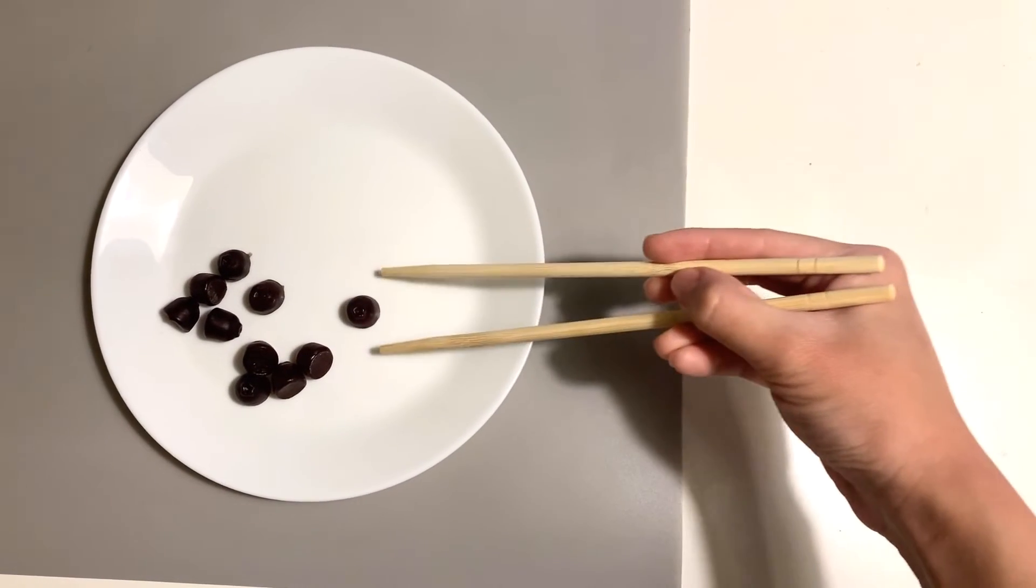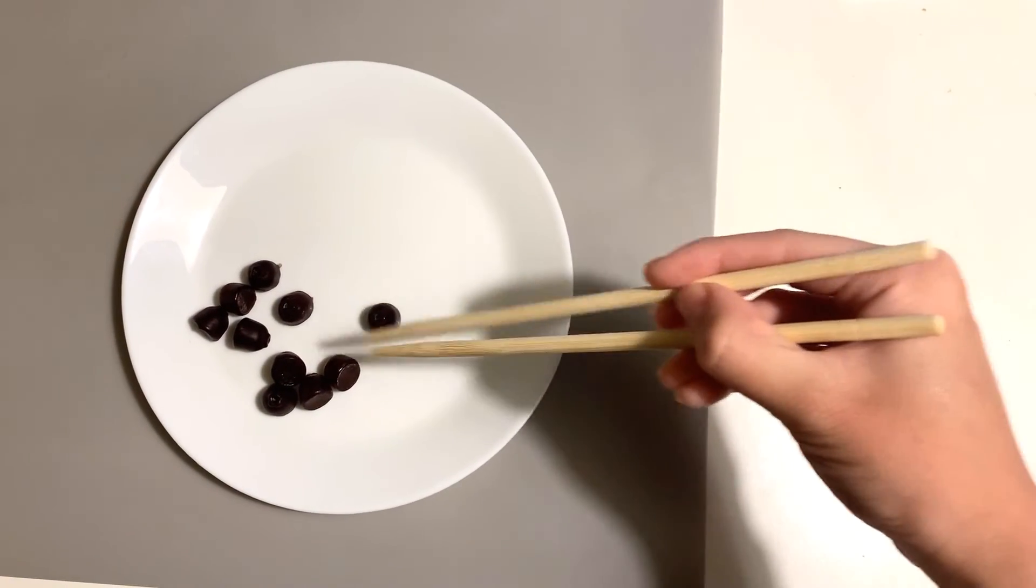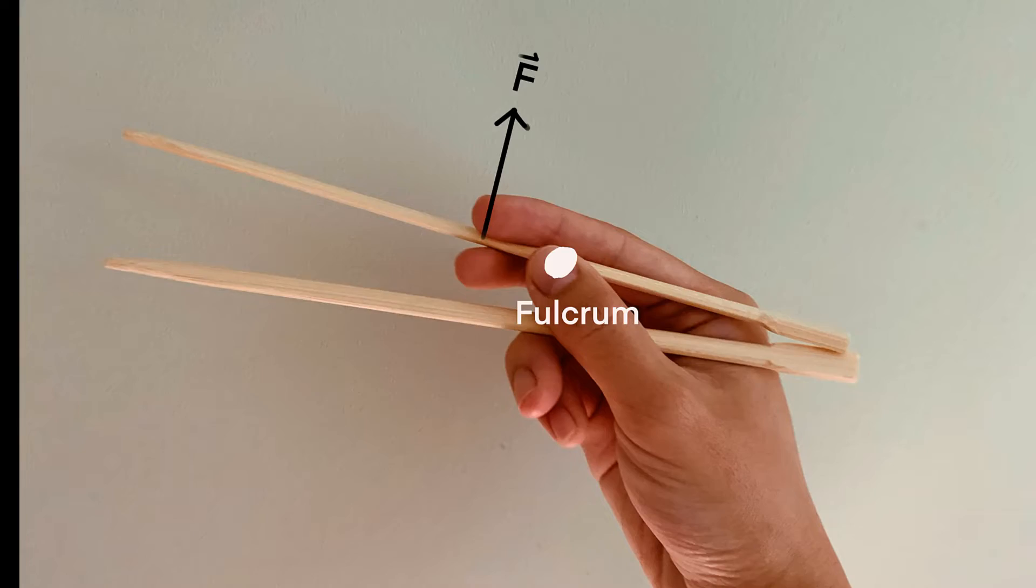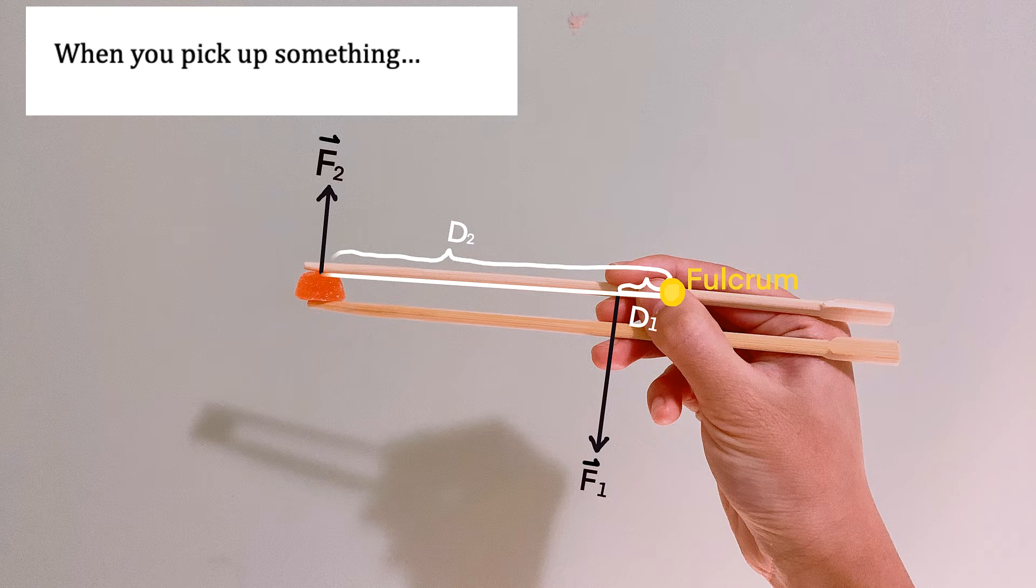Now, let's see how to use chopsticks to pick up something. What do you notice? Your thumb acts as a fulcrum. The index finger and the middle finger together control and apply the force up or down. f1 is the force applied and f2 is the resistance force.